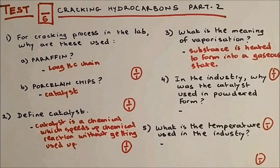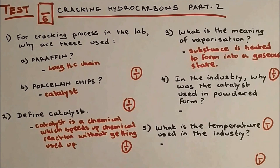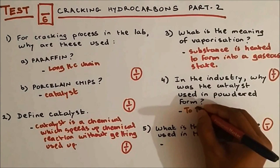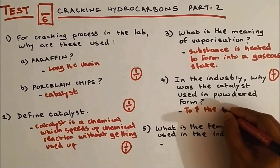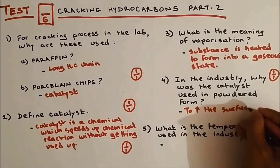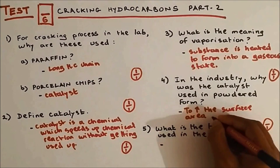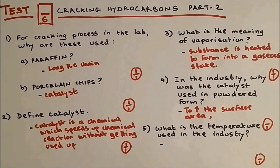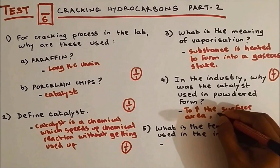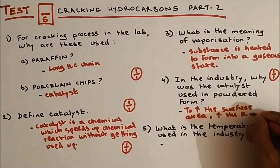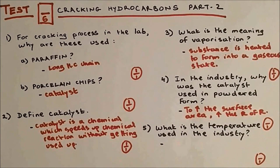Question four: In the industry, why was the catalyst used in the powdered form? The catalyst is used in a powdered form to increase the surface area. Increasing the surface area will increase the rate of reaction, so more products will be formed, which will be beneficial to the company.